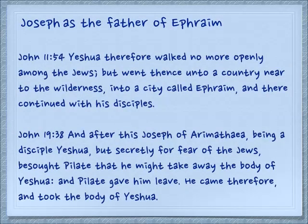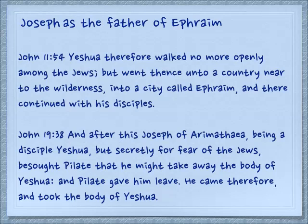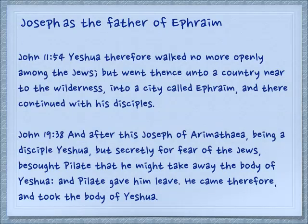Another interesting thing about Joseph is that he is the father of Ephraim. So what do we see about Yeshua? In John 11:54, Yeshua therefore walked no more openly among the Jews, but went into a country near to the wilderness, into a city called Ephraim, and there he continued with his disciples. And again in John 19:38 — after this, Joseph of Arimathea, being a disciple of Yeshua but secretly for fear of the Jews, besought Pilate that he might take the body of Yeshua, and Pilate gave him leave, and he came and took the body of Yeshua. Now it turns out that Arimathea is a town called Ramatayim, and it is in the hill country of Ephraim. So here we have these two shadow pictures — the body and the person of Yeshua is being cared for, kept and held by Ephraim. And who is Ephraim? Maybe you are.